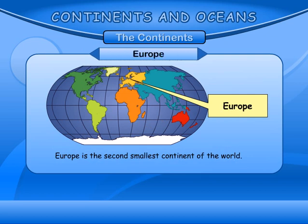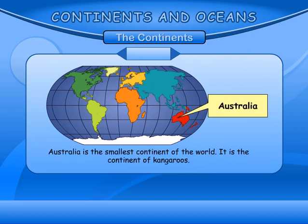Europe is the second smallest continent of the world. Australia is the smallest continent of the world. It is the continent of kangaroos.